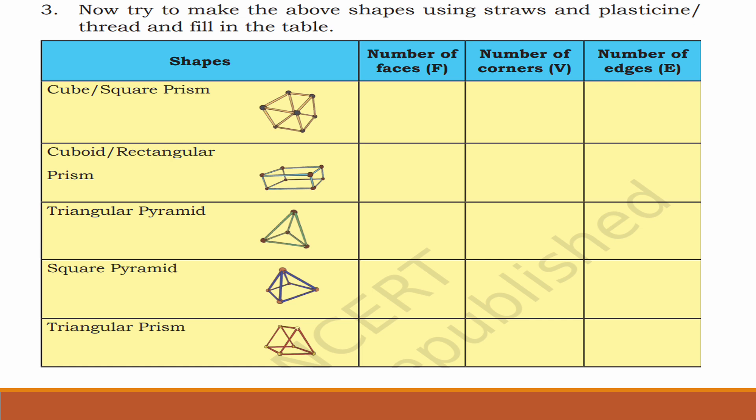Now try to make the above shapes using straws and thread and fill in the table. For a cube or square prism, you can make it using straws and threads — count the number of faces, corners and edges. A cube has six faces, eight corners and twelve edges. A cuboid or rectangular prism also has six faces, eight corners and twelve edges.